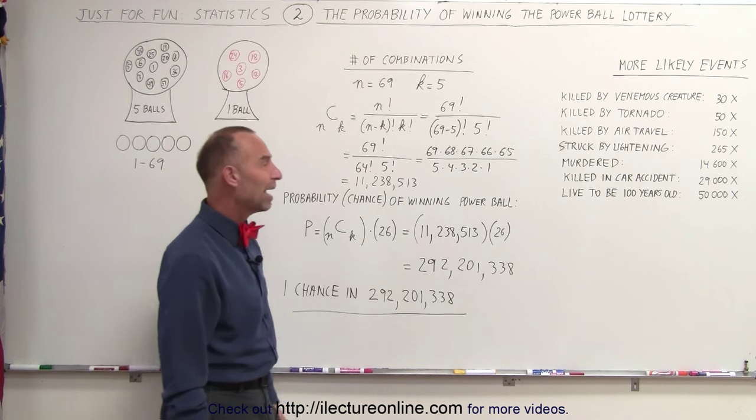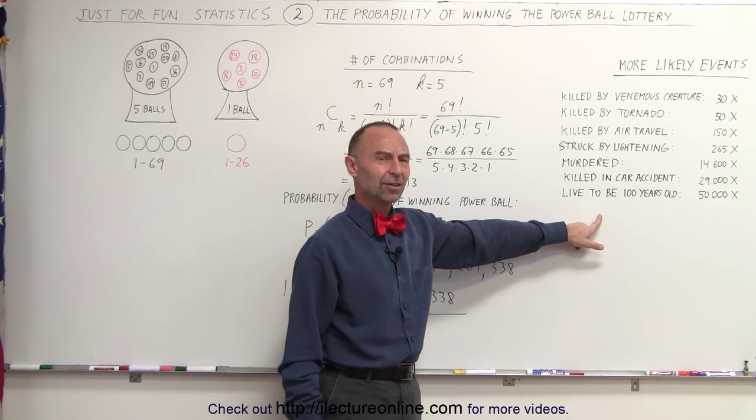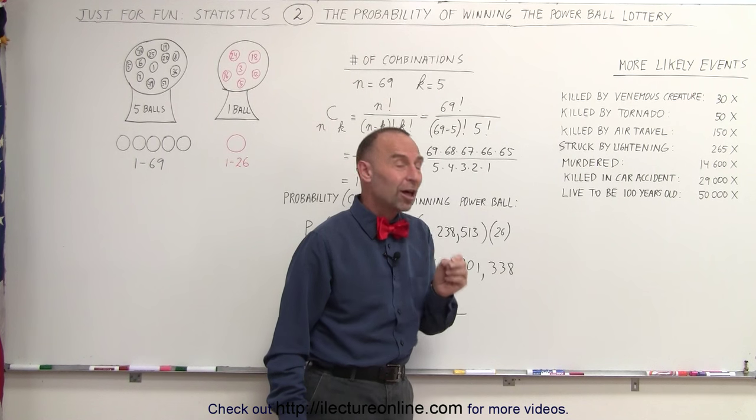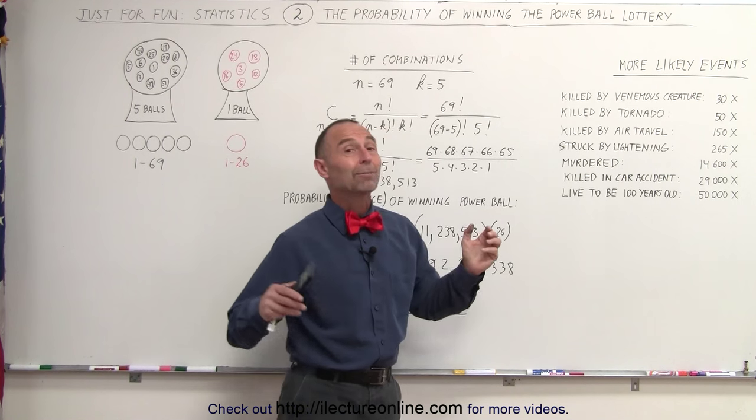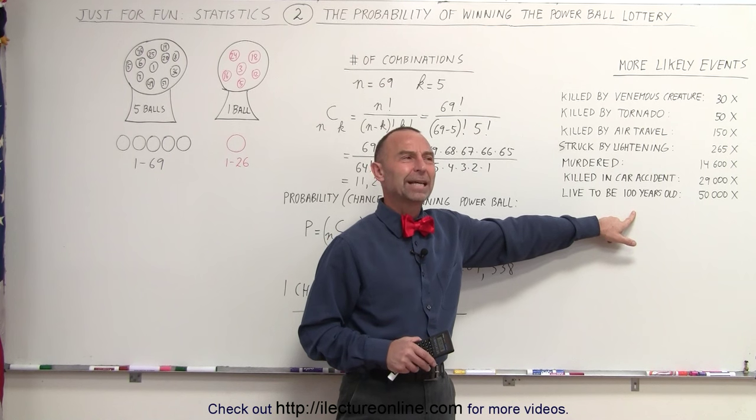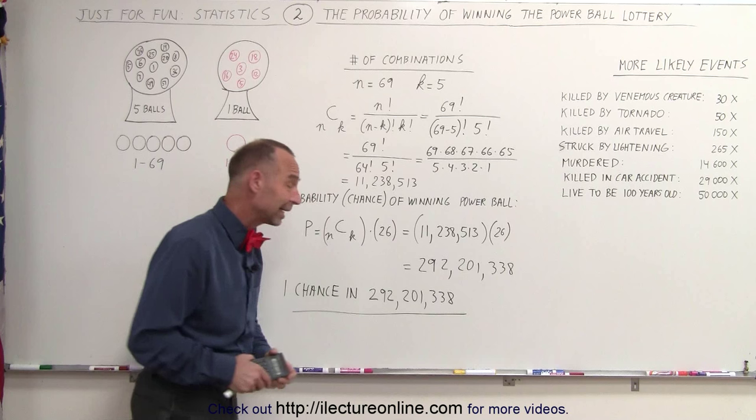To even the chances, you'd have to buy 50,000 lottery tickets, $100,000 of lottery tickets, to have just as much chance of winning the grand prize of the lottery than to live to be 100 years old. I think I'll still stick with this one, because I don't want to spend $100,000 on lottery tickets.